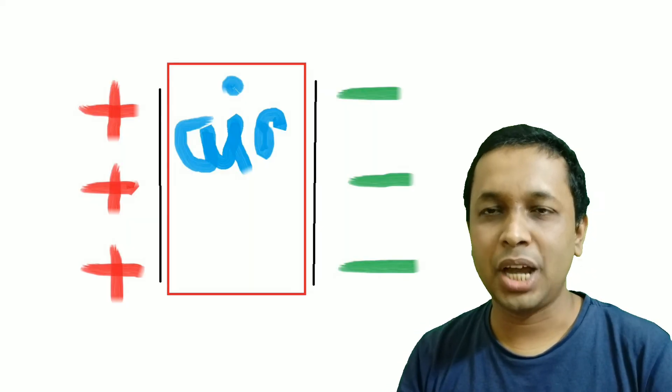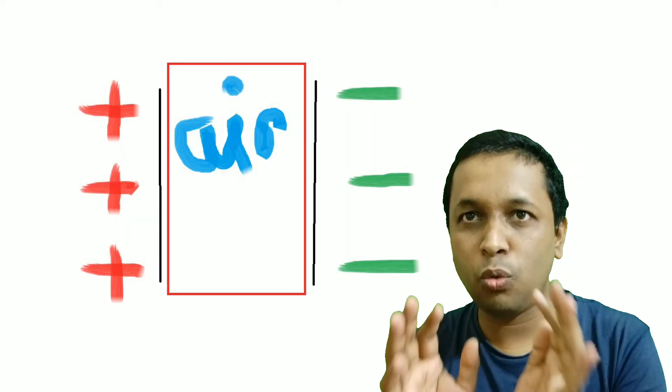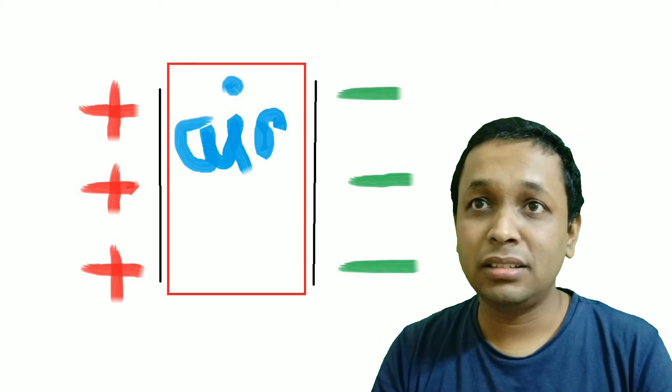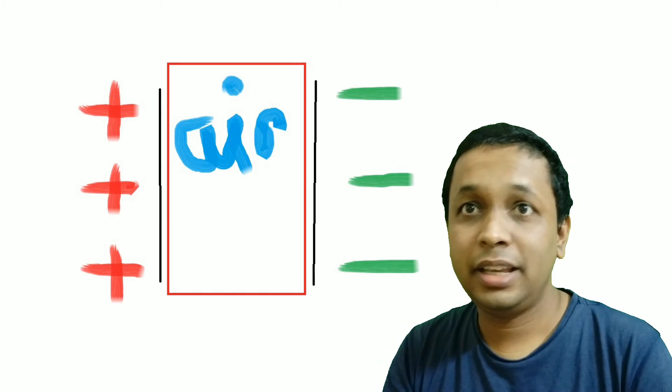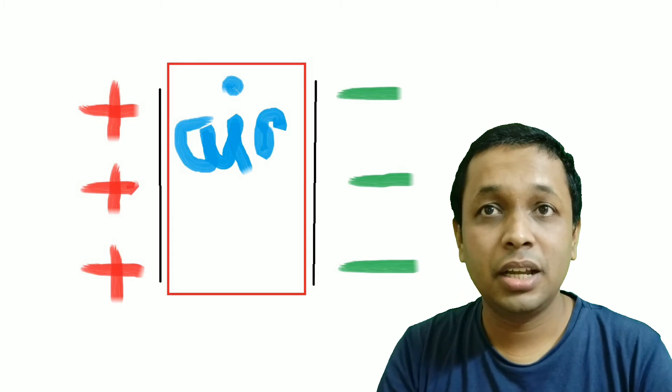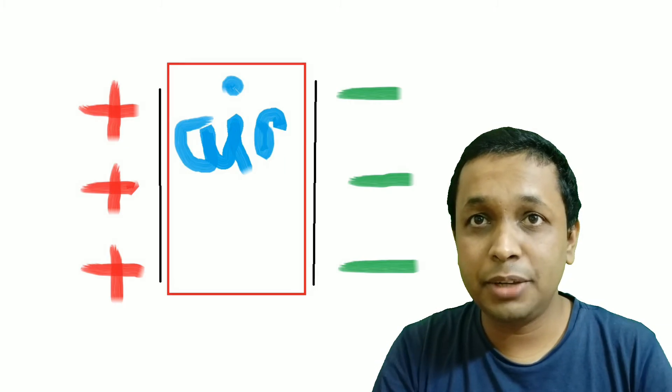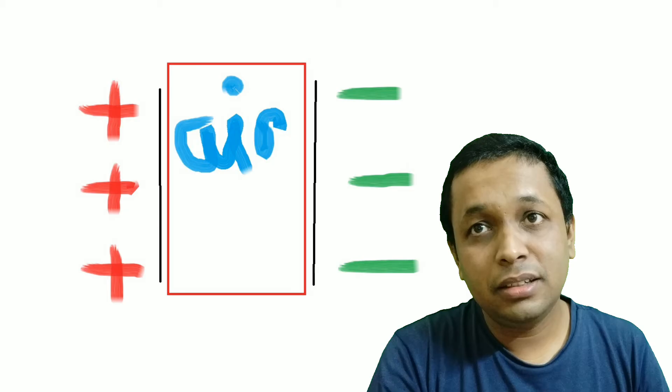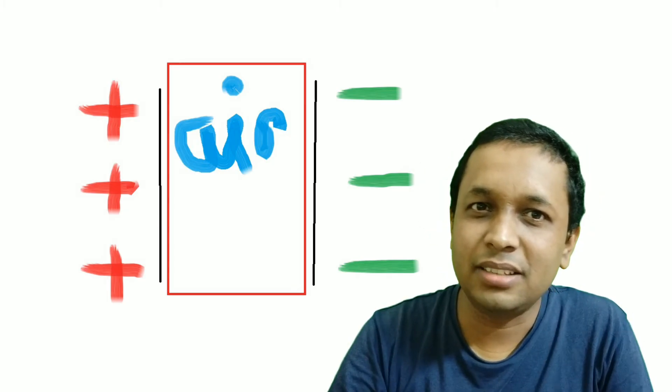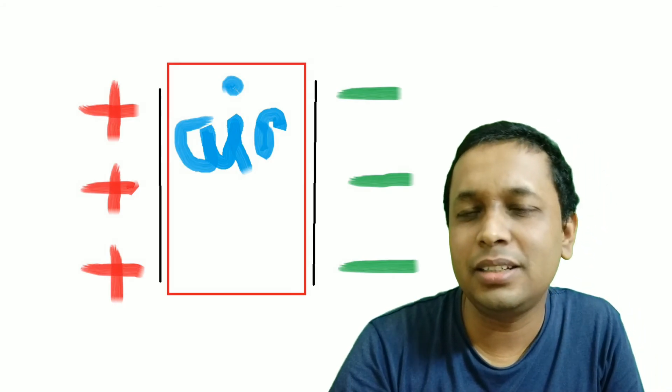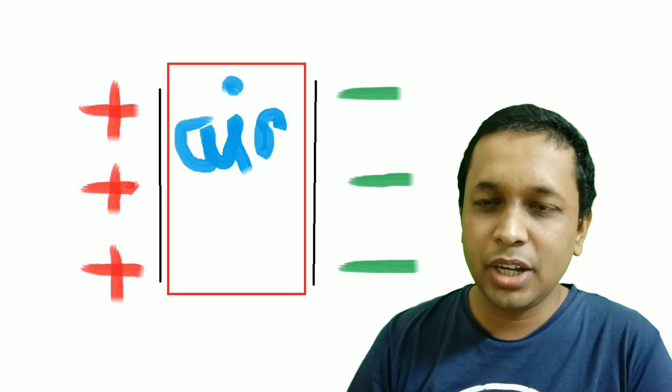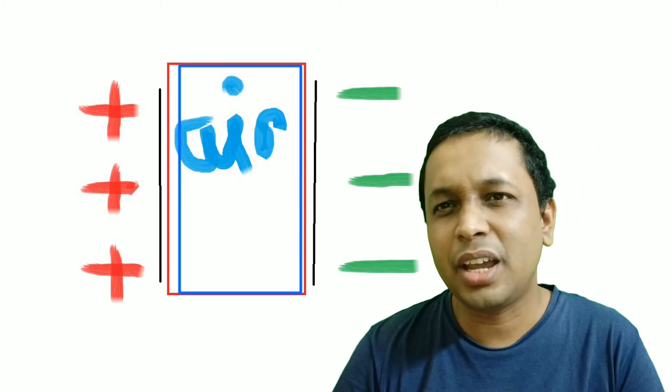The force between two charged particles depends on what is between them. If anything other than empty space or vacuum comes between them, the force between the charges is reduced. This is given by a quantity called permittivity with the symbol epsilon 0. If the permittivity increases, then the force between the two charged particles decreases. The permittivity of free space like vacuum is almost equal to that of air.